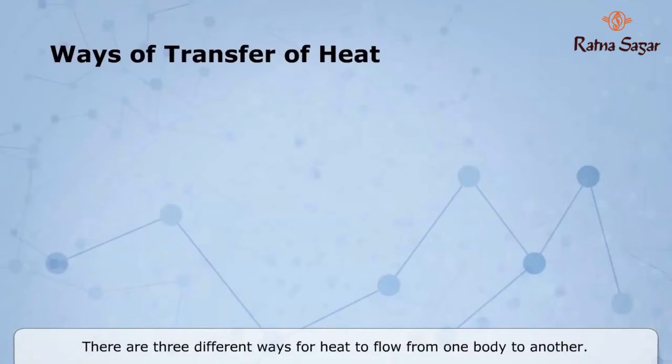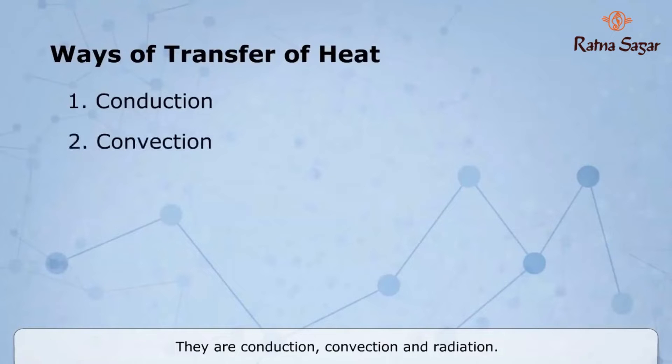There are three different ways for heat to flow from one body to another. They are conduction, convection, and radiation.